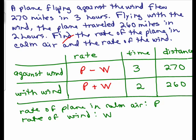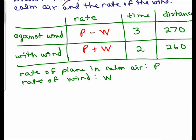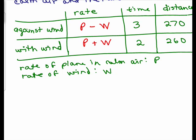There's a couple ways you could write your two equations at this point. We know that rate times time equals distance, so I have two equations. The first equation is P minus W times 3 equals 270. I'm going to write the three out in front: 3(P - W) = 270. The other equation is P plus W times 2, so 2(P + W) = 260.